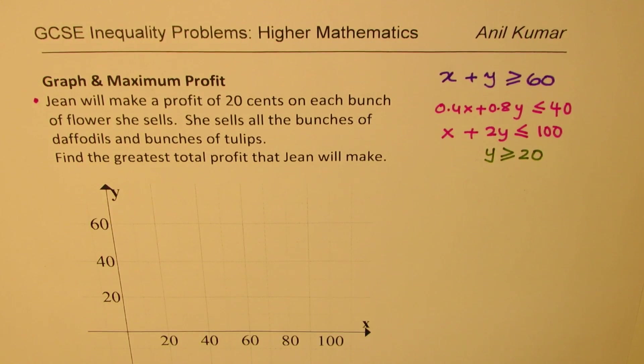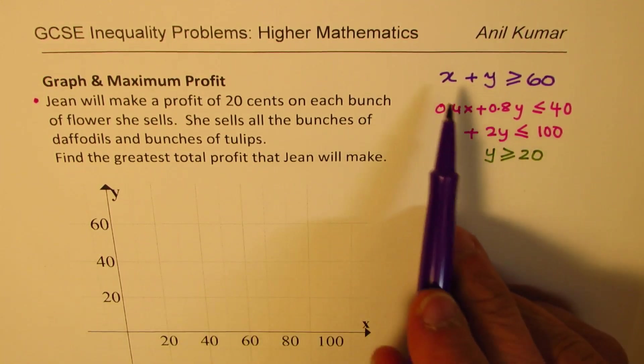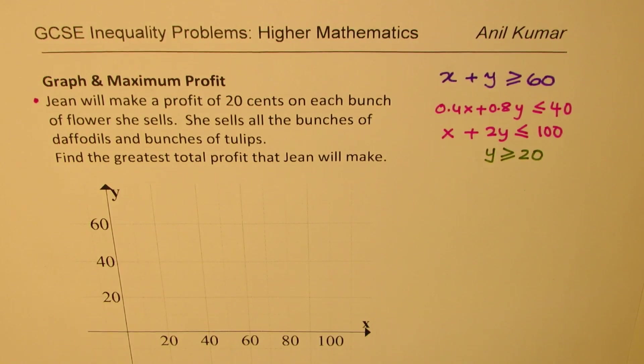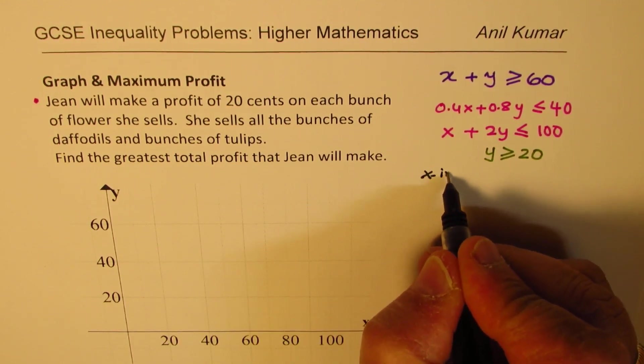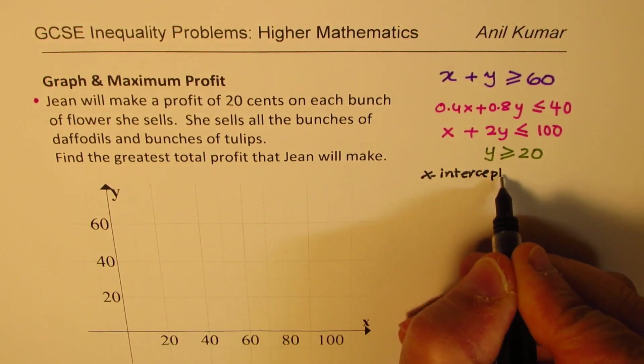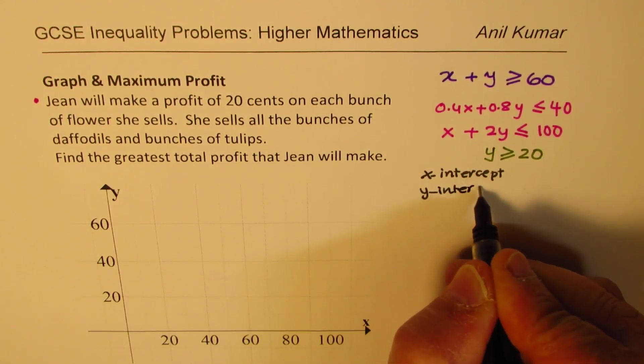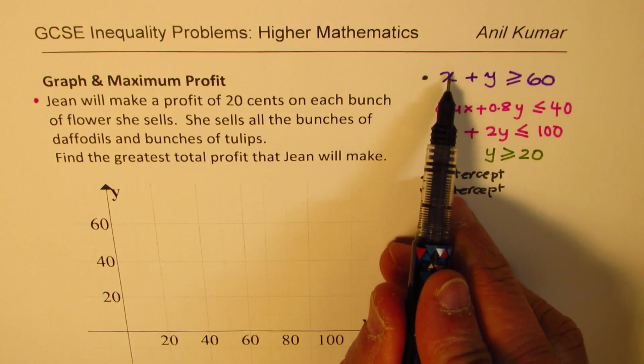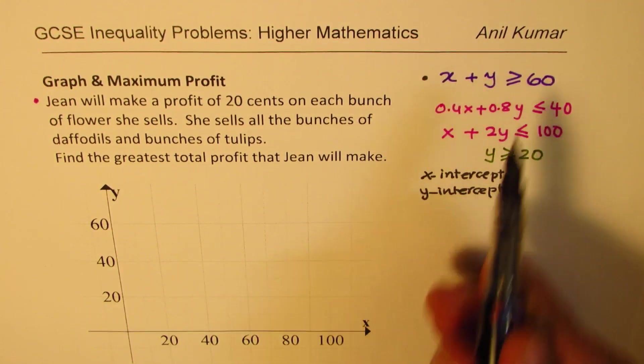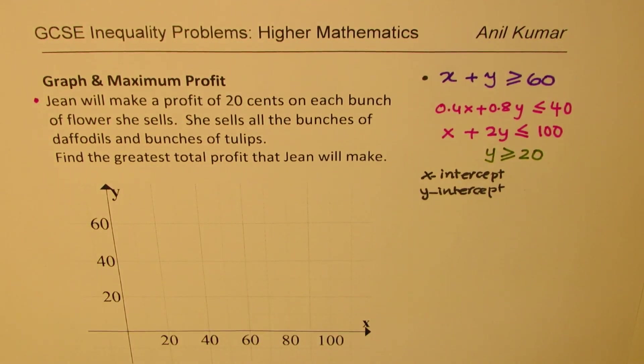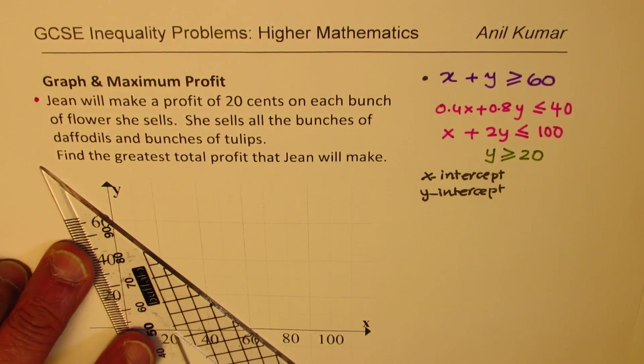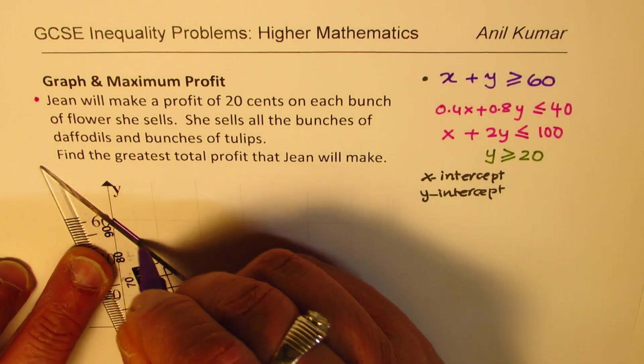Now let us see how to sketch these graphs. The first one which is X plus Y equals to 60. So all these graphs will be sketched using intercepts. Basically we will try to find the X and Y intercepts to sketch. So for the first one, what is the X intercept and what is the Y intercept? If X is 0 Y will be 60. If Y is 0 X will be 60. So we will draw a line from 60 Y intercept to 60 X intercept. So we get our first graph here.